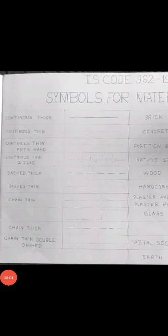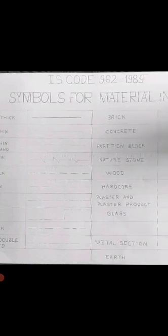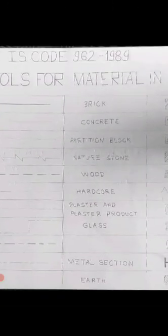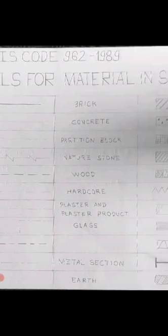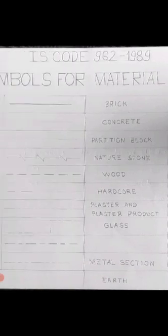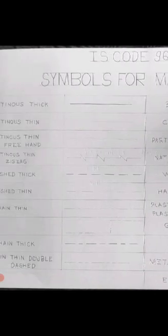Welcome students to the subject building drawing. The topic is IS code 962, 1989. It is regarding symbols for material in section and types of lines.